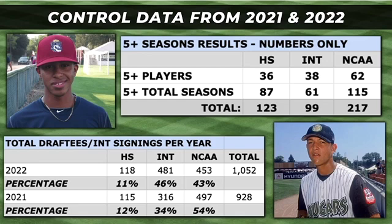Now, this is where things get a little bit tricky, but I'm going to do my best to explain how I created success rate scores. You can see the total number of five-plus WAR seasons for the high school, international, and NCAA subgroups. I also gathered the number of multiple five-plus WAR seasons per player to create a total number. I needed an actual control to measure this data against — the five-plus WAR players and seasons don't mean much unless the numbers can be measured against the total number of high school, international, and NCAA signings for a given year.